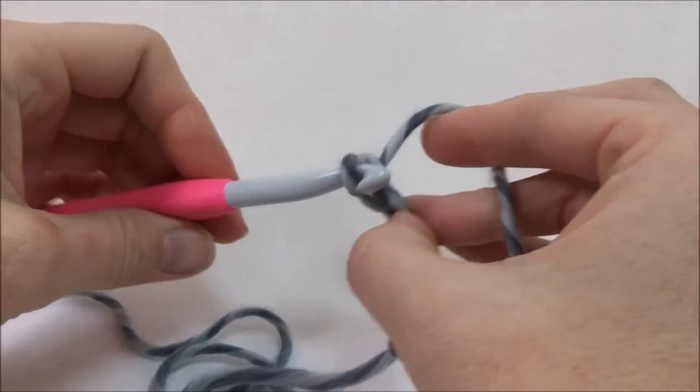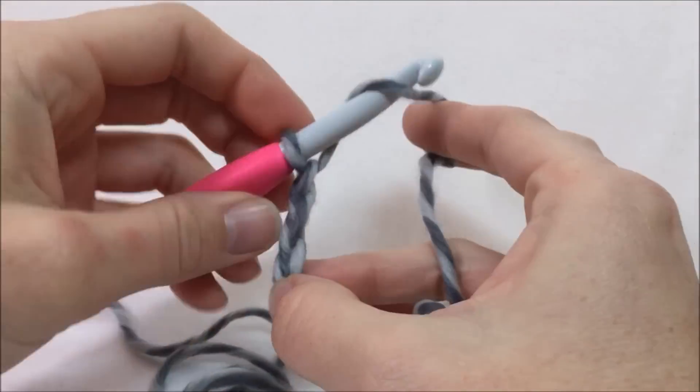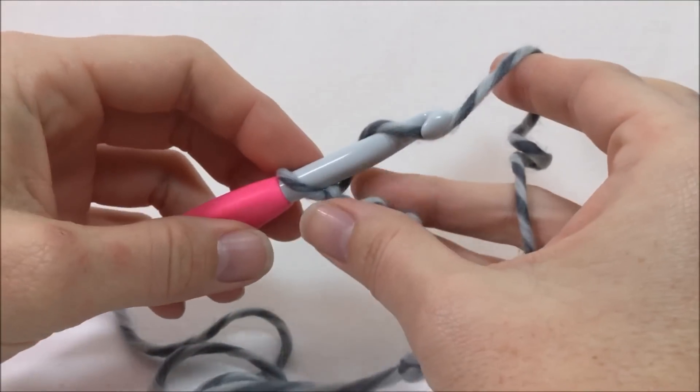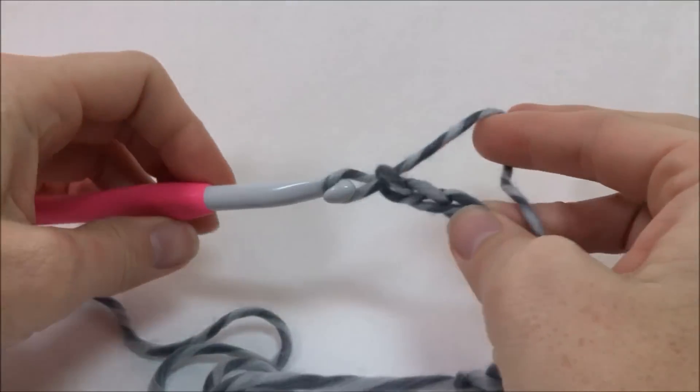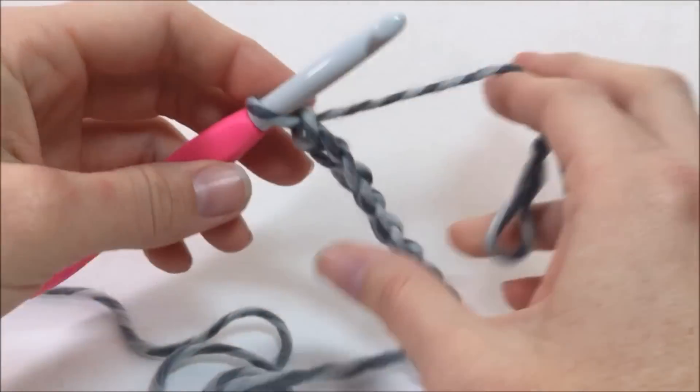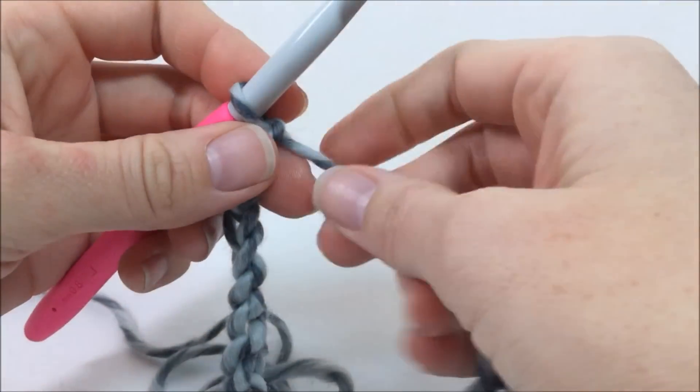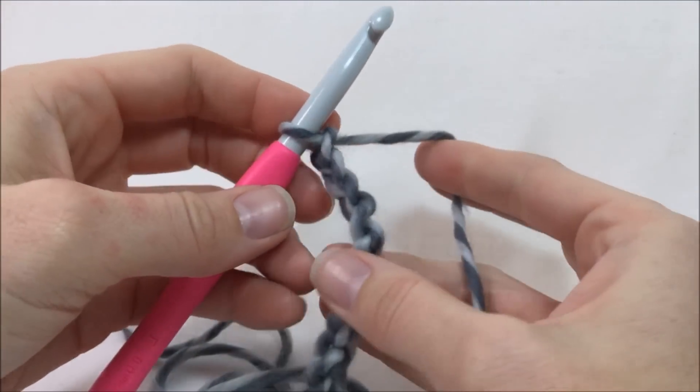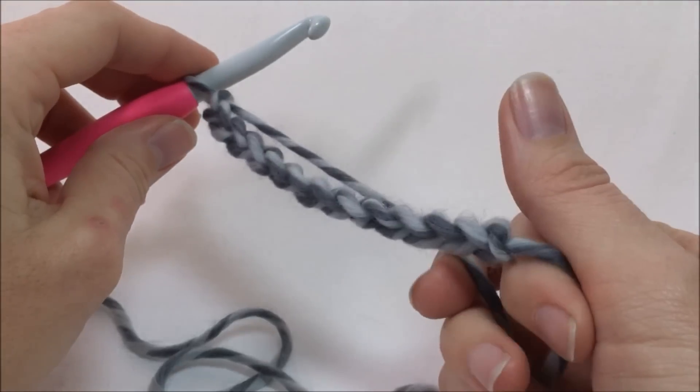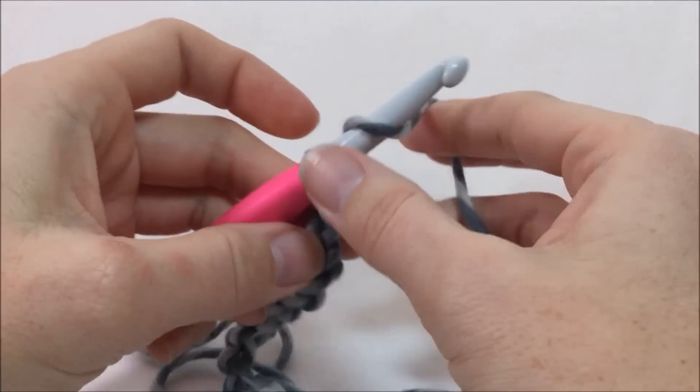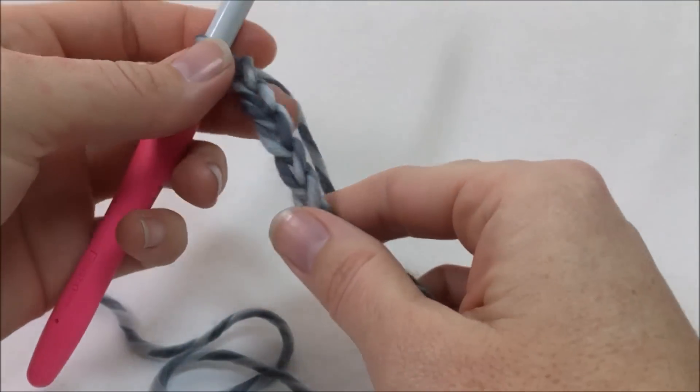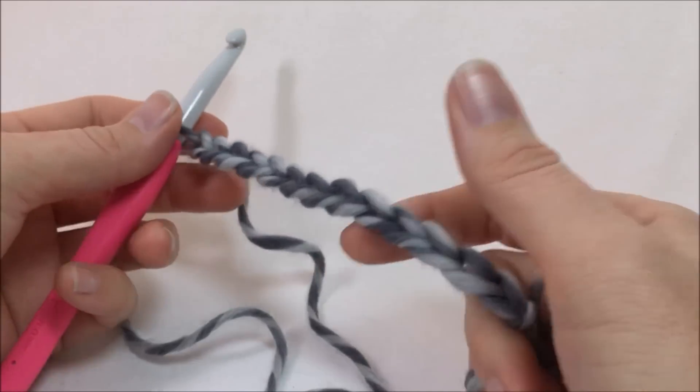If you know how to foundation single crochet, you can do that instead and you'll do 62 of those. So you can check out my foundation single crochet video if you are wanting to try that out. It's an easy edge, makes it look really nice, and it's just a cool little edge.